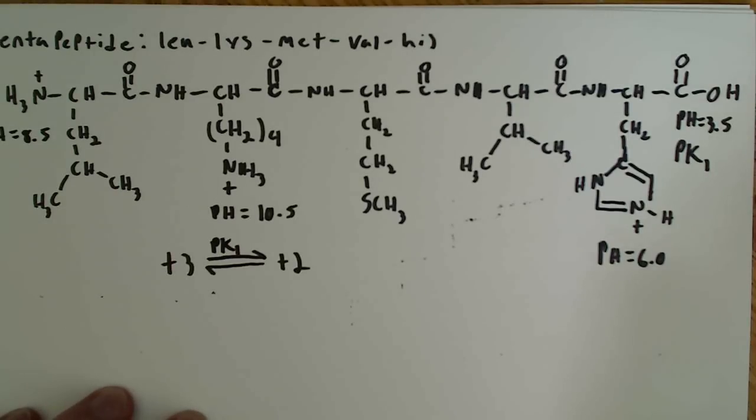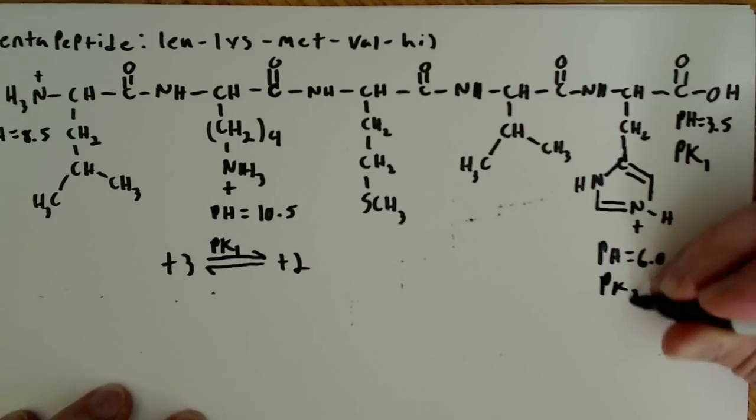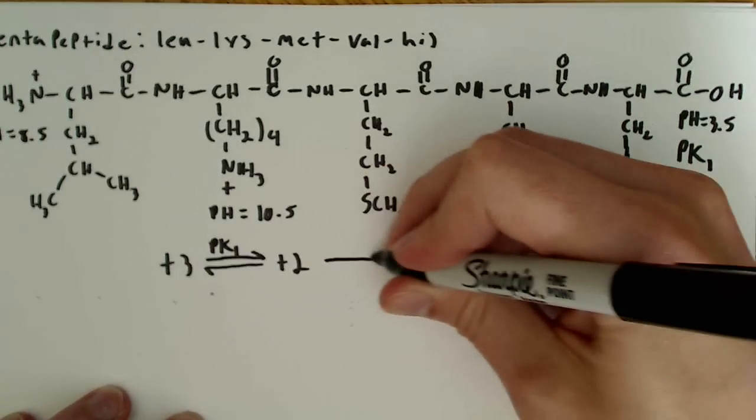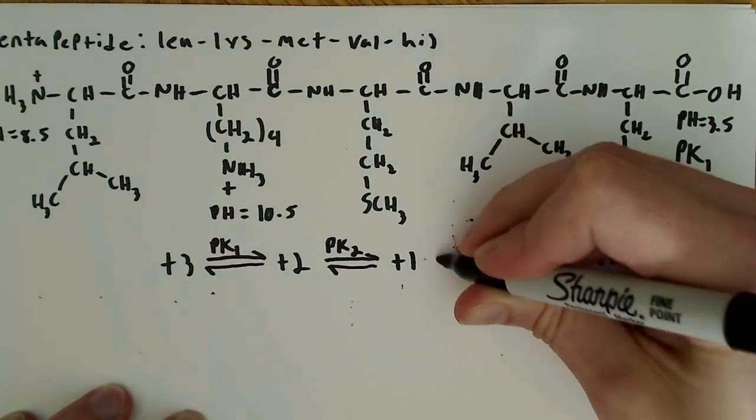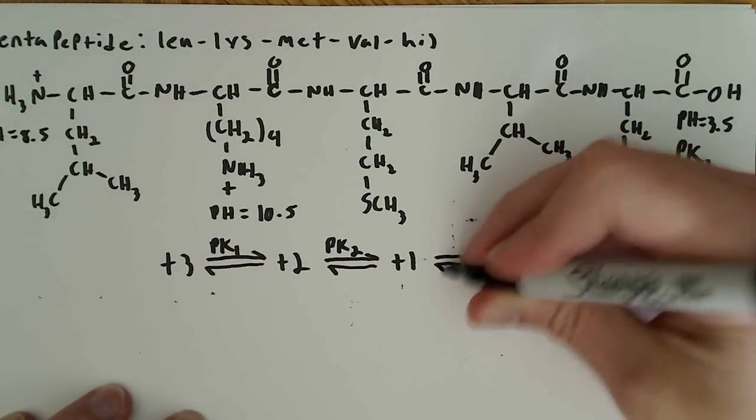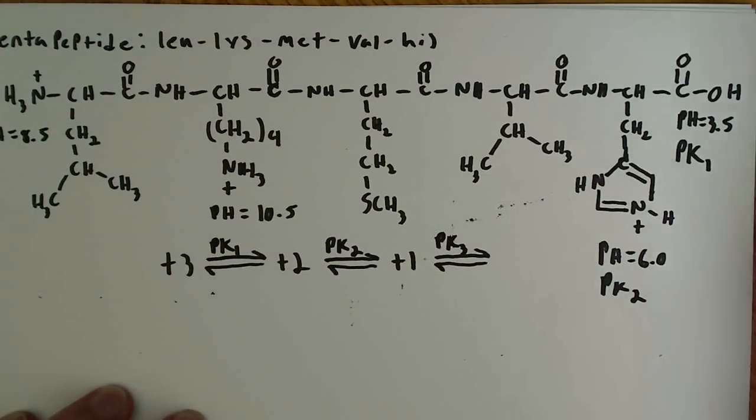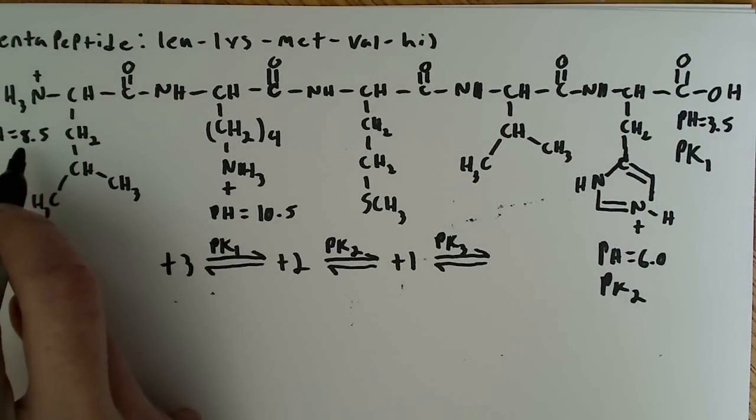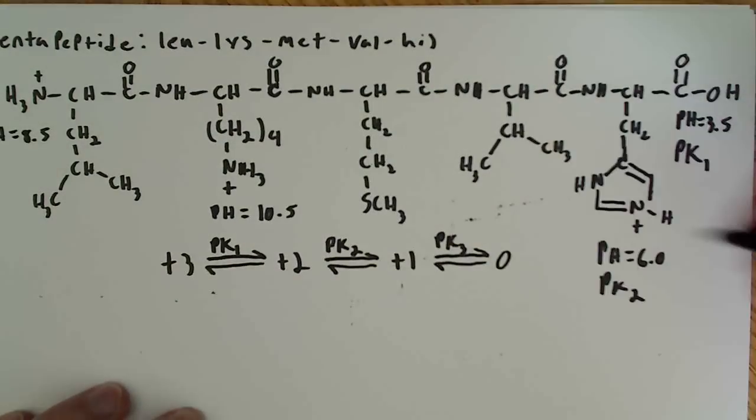So then I look and I say okay, what's the next one to come off, and that's this histidine here, and that's going to be pK2. So then I say okay, label that pK2, that gives us a plus 1 charge, and pK3, and that's going to be the next one to lose a proton at pH 8.5 for this amine group, so that ends up being a zero.